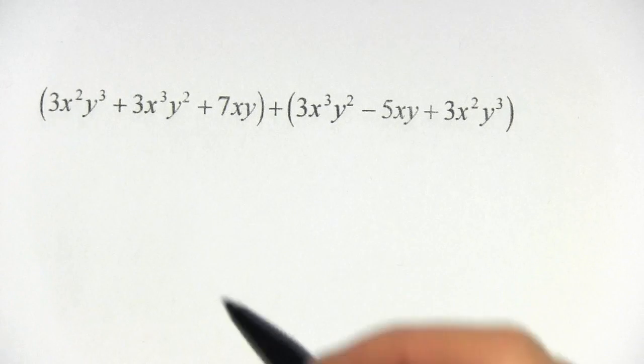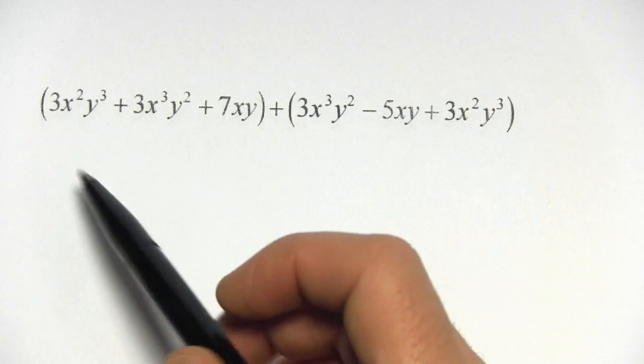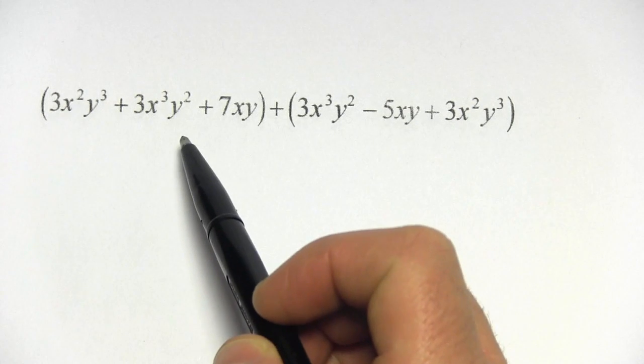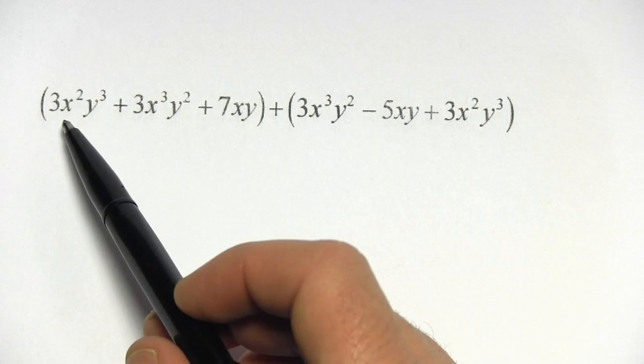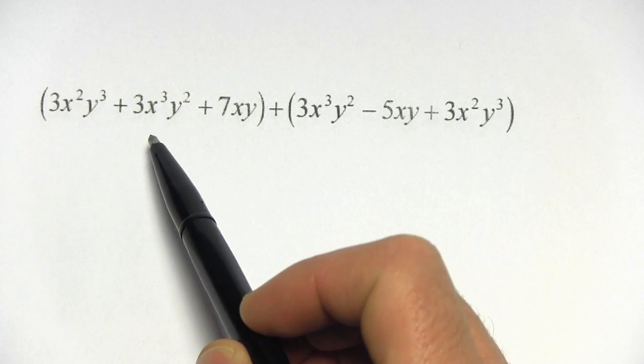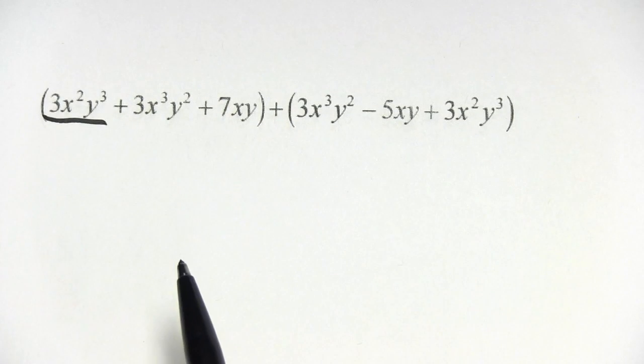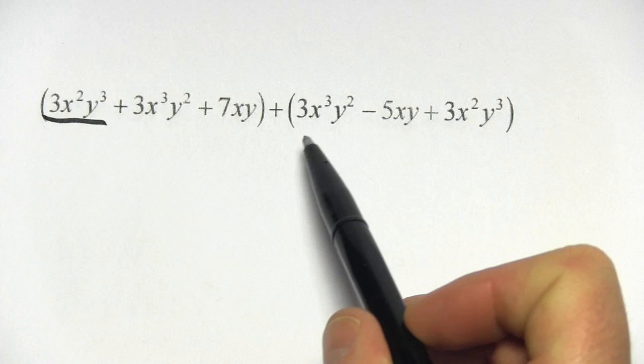The only trick here is they're trying to make you get confused. You've got an x squared y cubed term and then an x cubed y squared term. Those are different. This one the x is squared and this one the x is cubed. So let's go and look for an x squared y cubed term anywhere else in here.